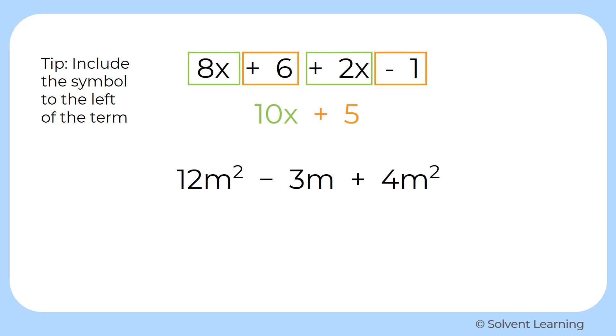Let's see if there are any like terms. Now they all have the same variable. They all have the variable m. But the first and last term have the exponent of 2 with the m. And the term in the middle does not.